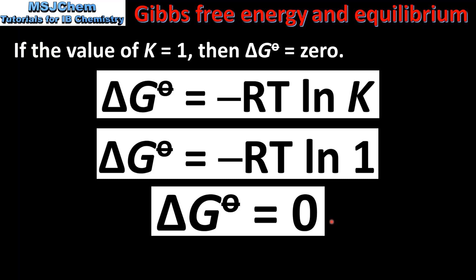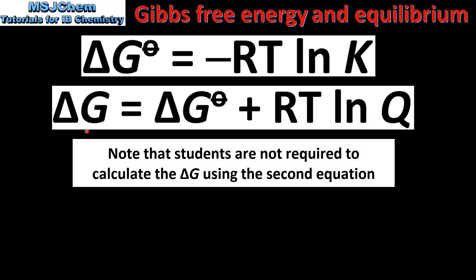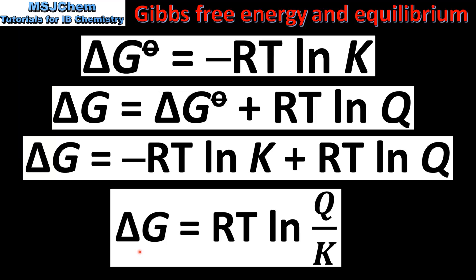Previously we used ΔG° = -RTlnK to calculate the standard Gibbs free energy change for a reaction at equilibrium. A second equation allows us to calculate the Gibbs free energy change for a reaction not at equilibrium, where we take the natural log of the reaction quotient Q. Substituting the first equation into the second gives a final equation: ΔG = RTln(Q/K). This gives the value of ΔG at any point in the reaction and tells us in which direction the reaction will proceed to reach equilibrium.